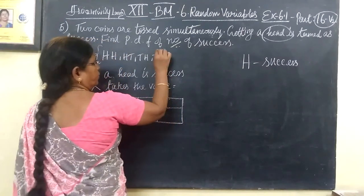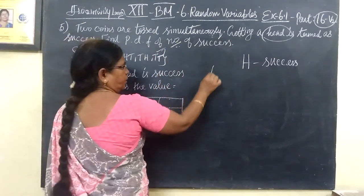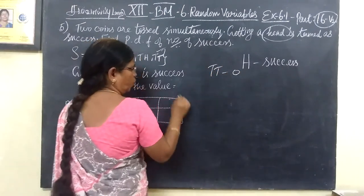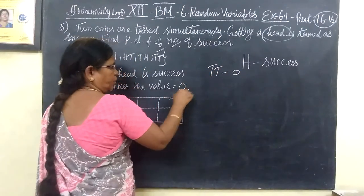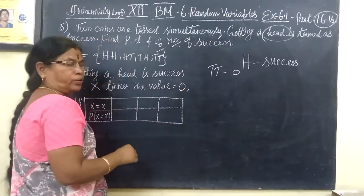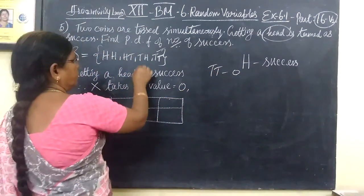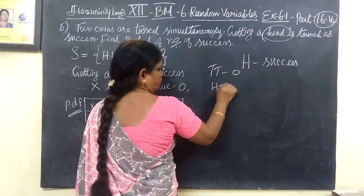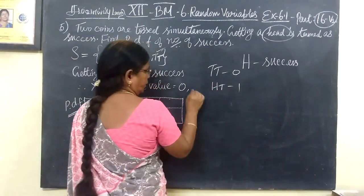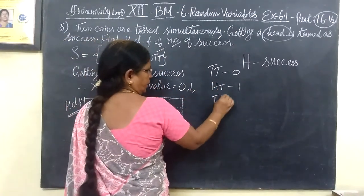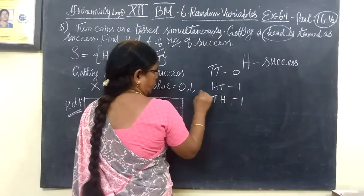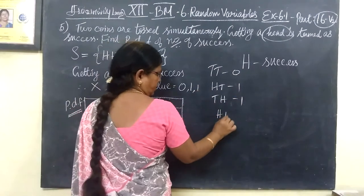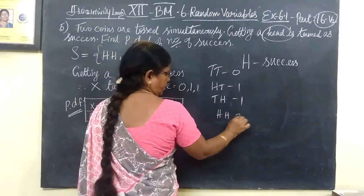X means the number of heads. The outcomes are: T, T — that means no head; then H, T; then T, H; then H, H.